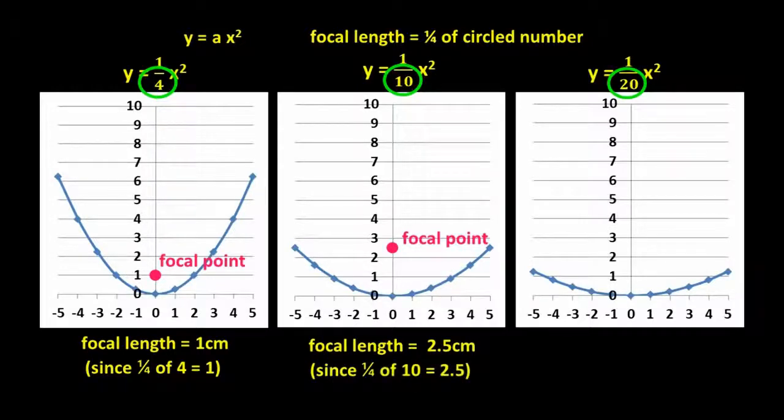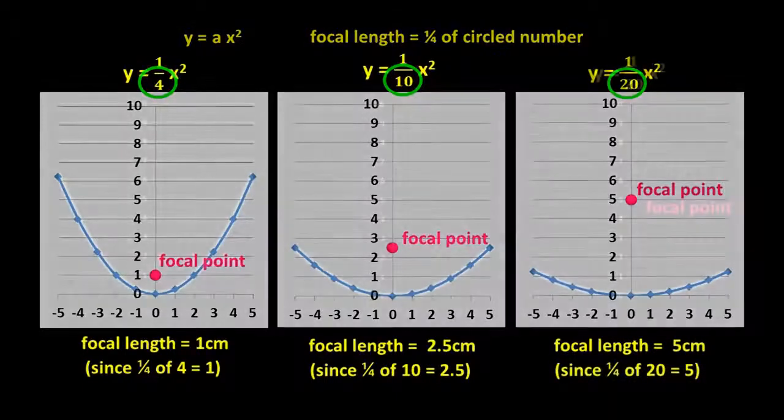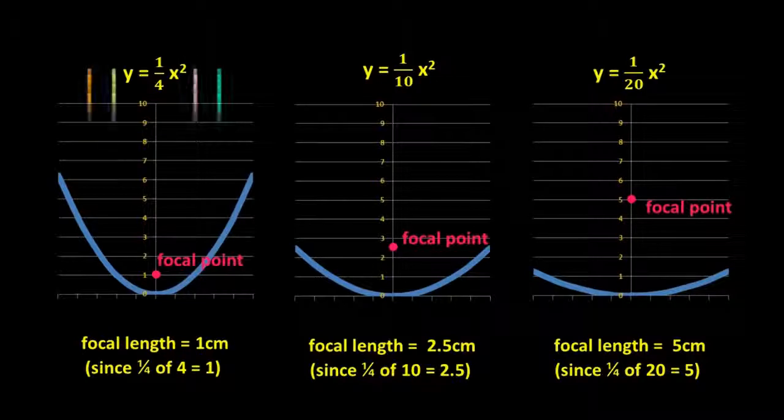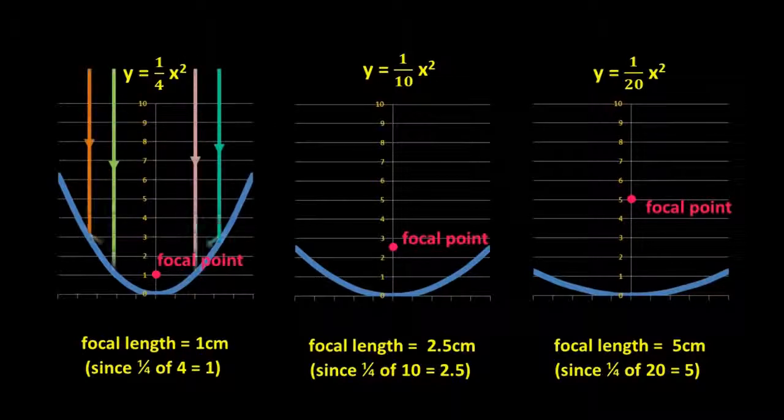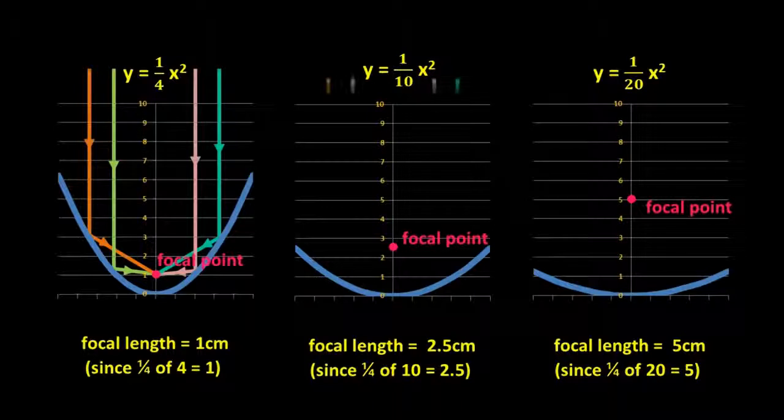So what's the focal length of a y equals one twentieth x squared graph? If you said five centimetres, you're correct. Let's now shine some light beams onto our parabolas. Focal length of one. Focal length of two point five.